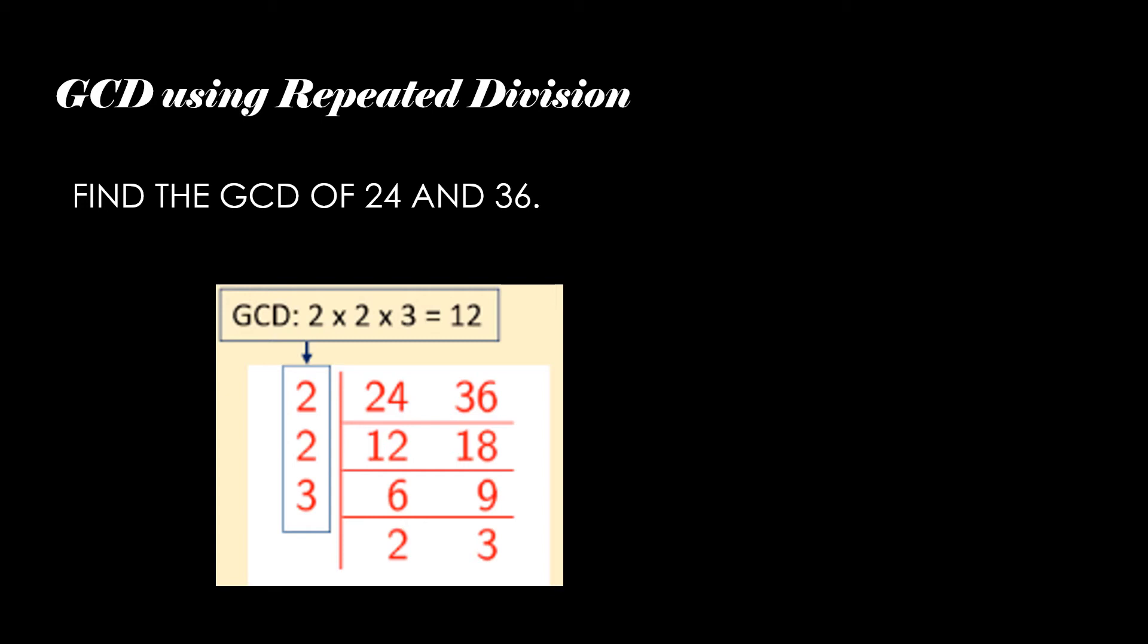So the common divisors are 2, 2, 3. So the product will be the GCD.